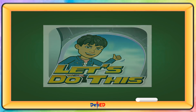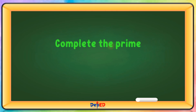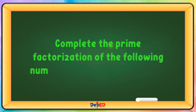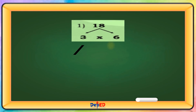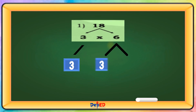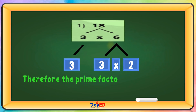Let's do this. Complete the prime factorization of the following numbers using the factor tree. Therefore, the prime factorization of 18 is 3 times 3 times 2.